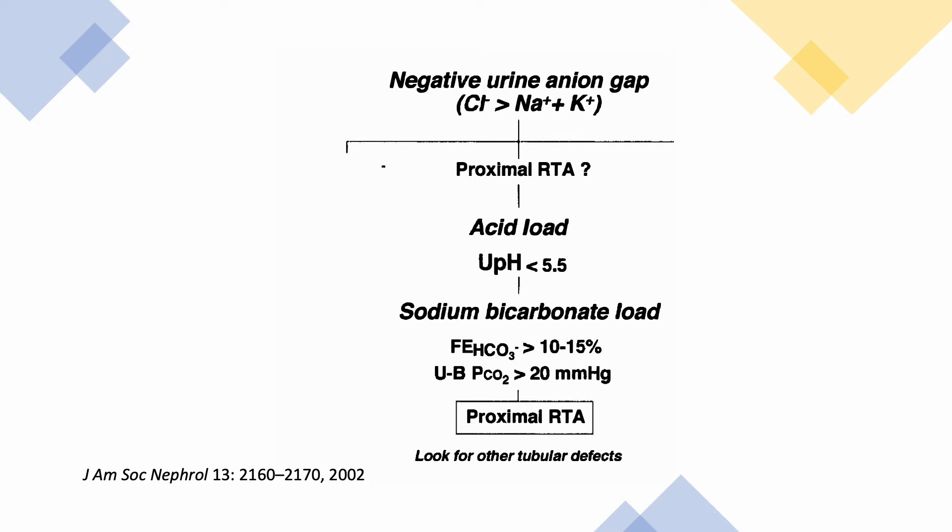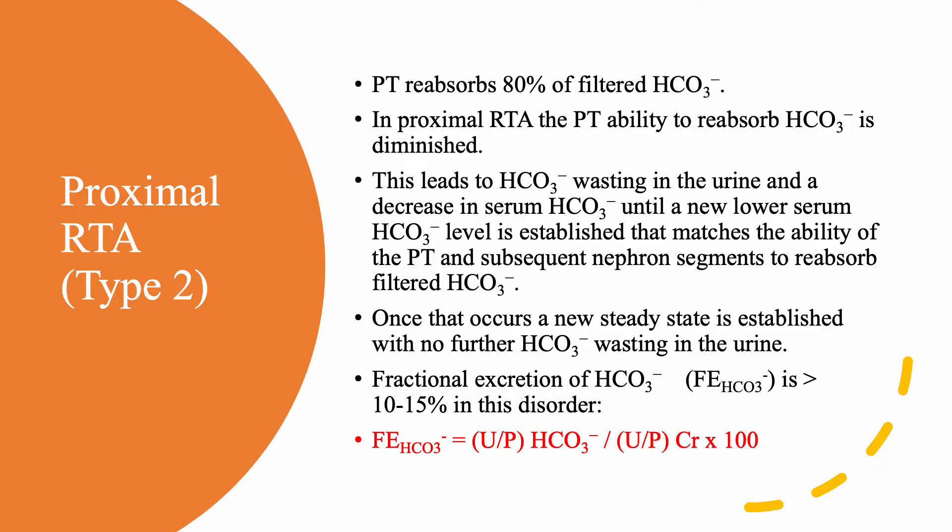The proximal tubule reabsorbs 80 percent of filtered bicarbonate. In proximal RTA, the proximal tubule's ability to reabsorb bicarbonate is diminished, so bicarbonate wasting in the urine begins until a new level is reached. Usually, once serum bicarbonate reaches 16 or 18, the wasting stops and a new threshold is established — the proximal tubule will then reabsorb bicarbonate, but serum bicarbonate stays at that lower level. When calculating fractional excretion of bicarbonate — above 10 to 15 percent — you need urine bicarbonate divided by serum bicarbonate along with urine and serum creatinine. The problem is obtaining urine bicarbonate, as you must collect the urine without any air, and unfortunately most laboratories are unwilling to perform this test.